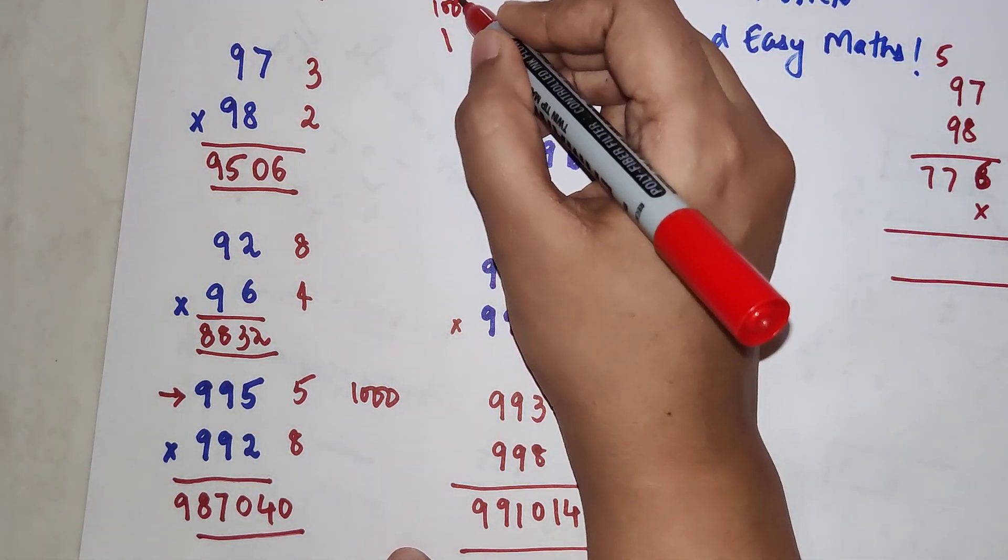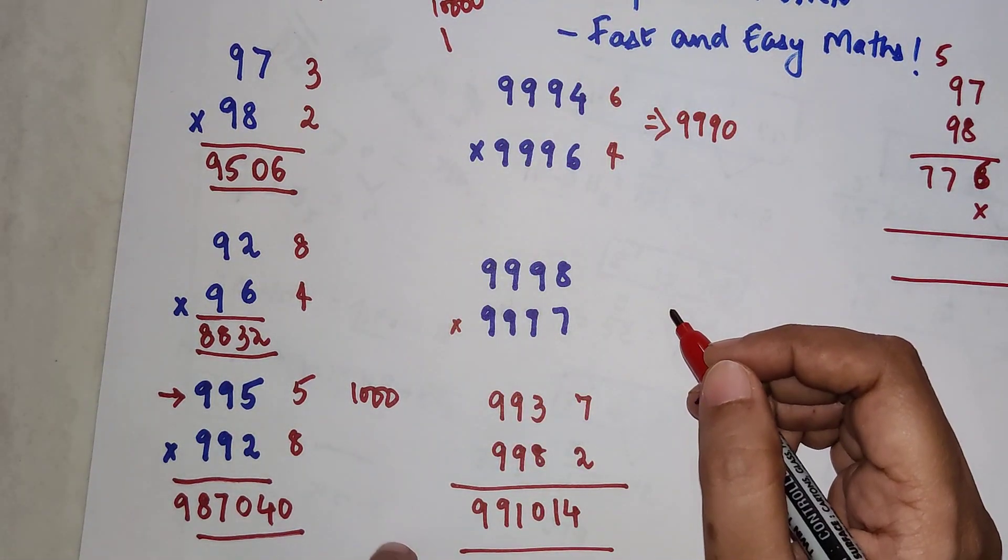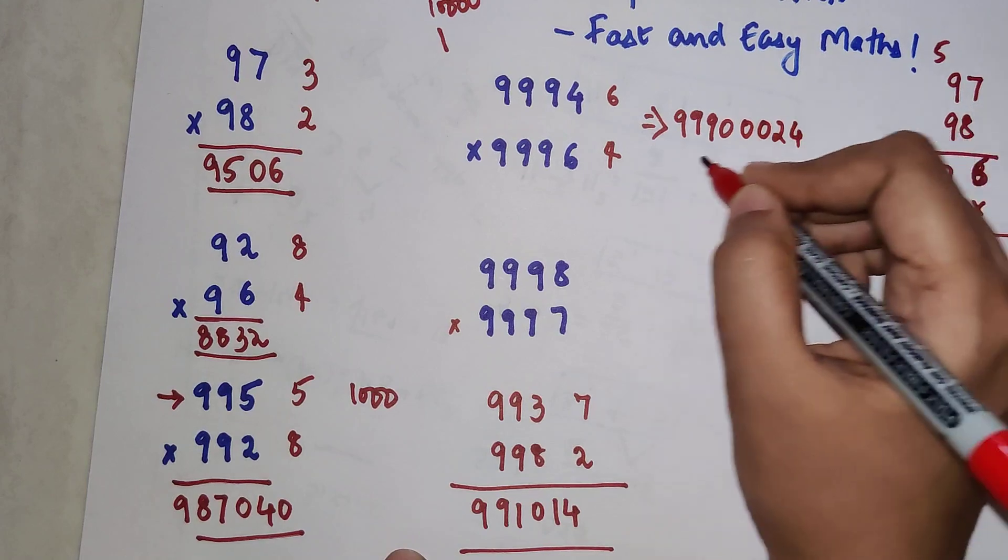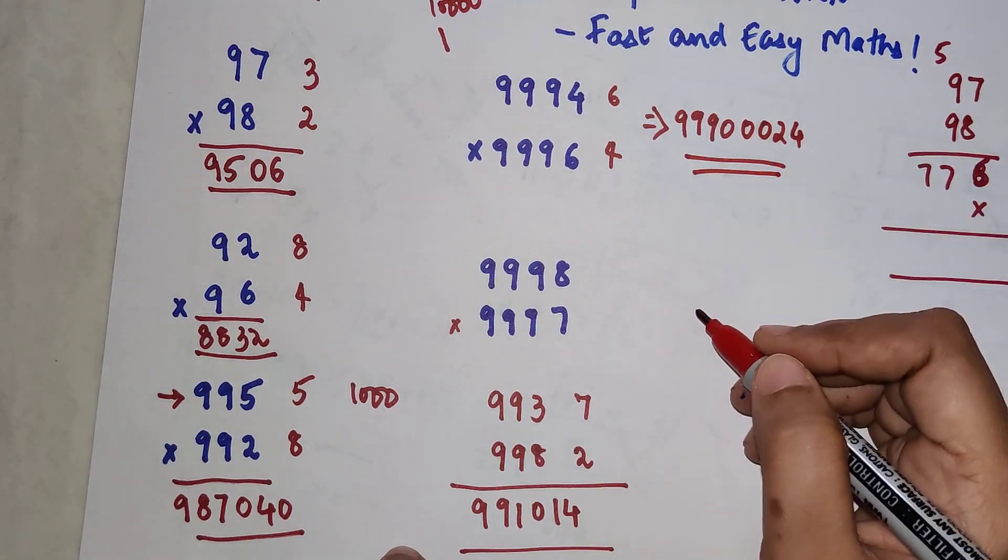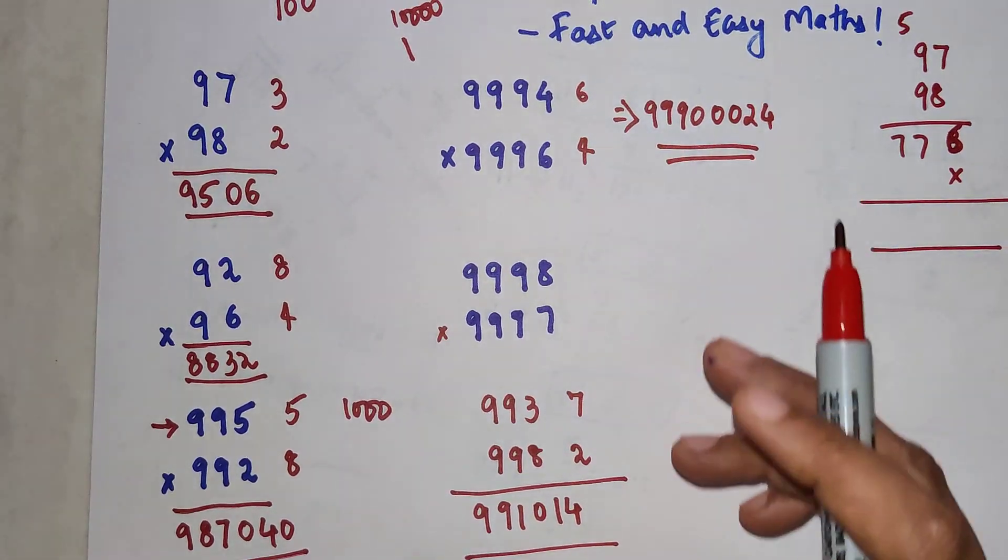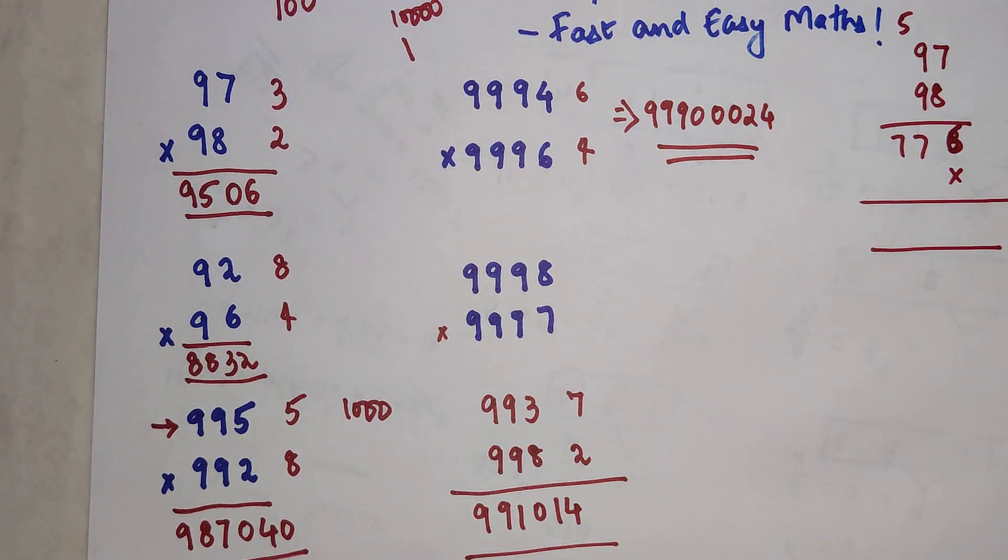10,000 has how many zeros? Four zeros. So your final answer will have 0024. This is your answer for this particular multiplication.